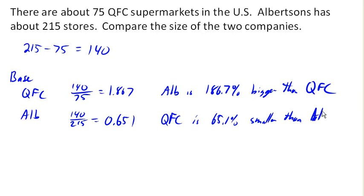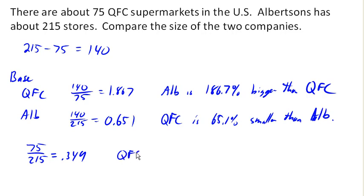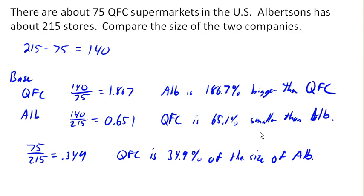In both of these cases, we're talking about the difference — these are percent differences. We could also talk about the size of Albertsons relative to QFC, or QFC relative to Albertsons. For example, if we look at QFC relative to Albertsons — notice we're not using the difference now, we're using the actual sizes — we get 0.349. So we could say QFC is 34.9% of the size of Albertsons. This is not talking about smaller than or bigger than as a relative difference, but one as a percentage of the other.